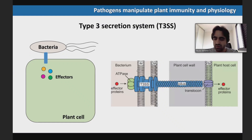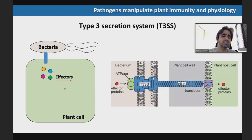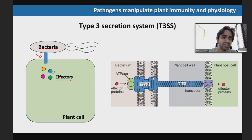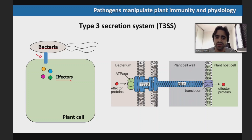Bacteria also use effector molecules. This system — the haustorium — is very common for filamentous pathogens like fungi and oomycetes. But bacteria can also use effectors. What I'm showing here is a cartoon of a plant cell with a bacterium using what we call a type 3 secretion system — literally a molecular syringe that microbes use to inject effectors inside the plant cell. These are virulence factors that will shut down the plant immune system and manipulate the metabolism. This syringe bridges the bacterial cell and the host cell.